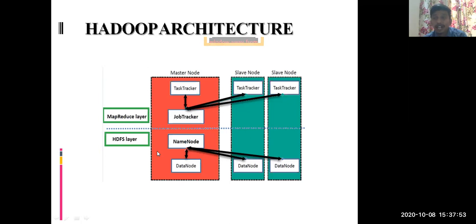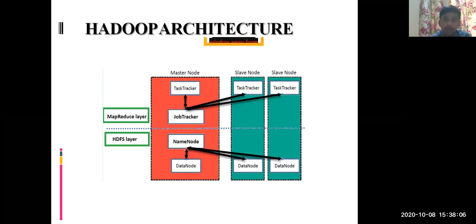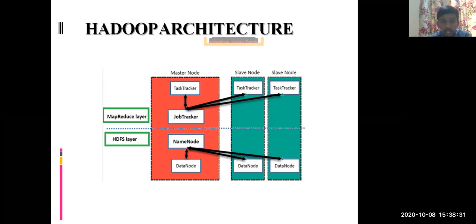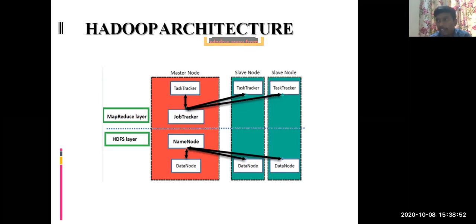At the bottom of the Hadoop architecture you have HDFS for data storage. There are five important daemons that run in the background: NameNode, Secondary NameNode, JobTracker, TaskTracker, and DataNode. You have master nodes and slave nodes. The NameNode is the master of all nodes — it is the main component of the cluster.